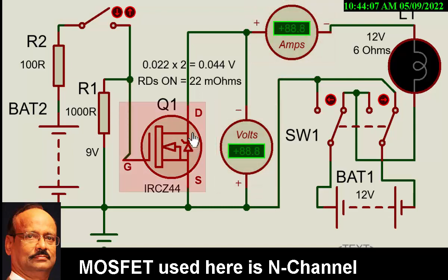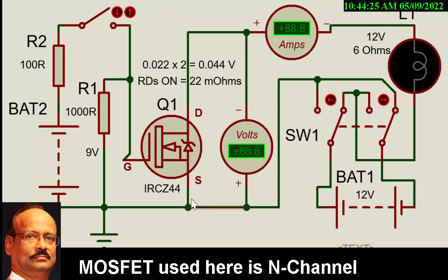Conventionally, a MOSFET conducts from drain to source. In most circuits, it conducts from drain to source while the gate is at a higher potential from the source — that means when the gate is triggered. But we will see an operation here where the current flows from source to drain. Conventionally one would assume that this current would flow through the built-in diode, but actually it is not. This is what we are going to demonstrate here.